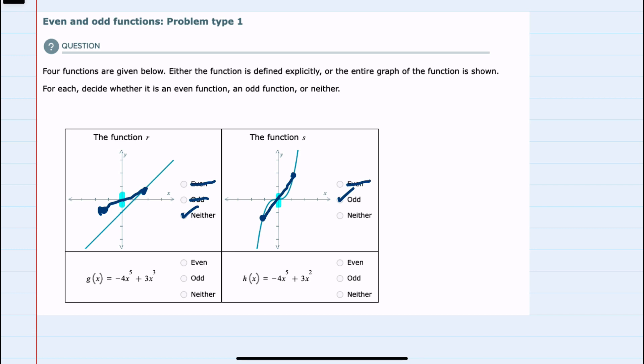And then for the last two, we don't have the visual for the graph. We only have the function itself. So here we will use the definitions for even and odd, where an even function says that if you replace x with a negative x, the function actually doesn't change. It's still f(x).